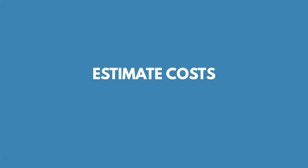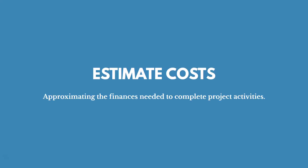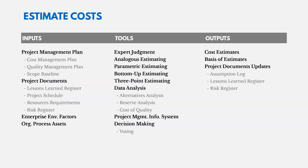Now let's look at estimating costs — approximating the finances needed to complete project activities, looking at how much it's going to cost to get the work done. Our project management plan is going to be an input, and the key component there is the cost management plan. The cost management plan tells us how we're going to do this, what method we're going to use, and what tools.